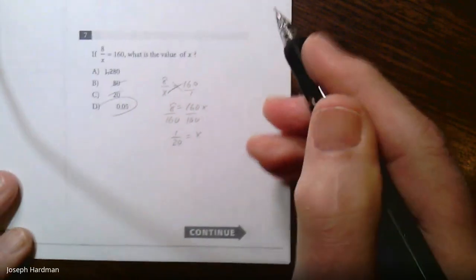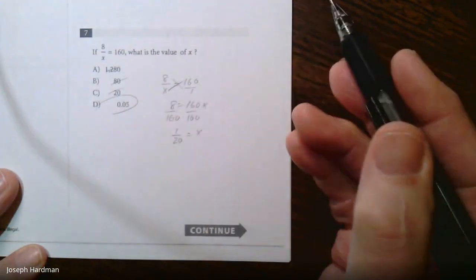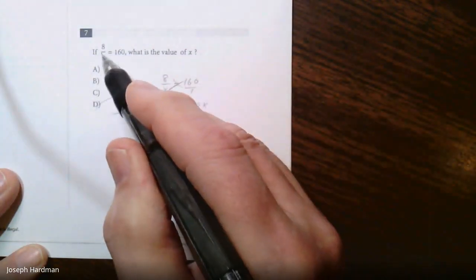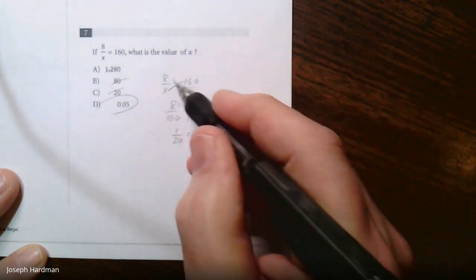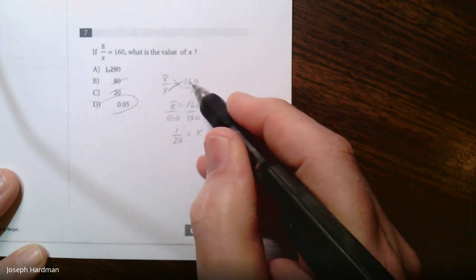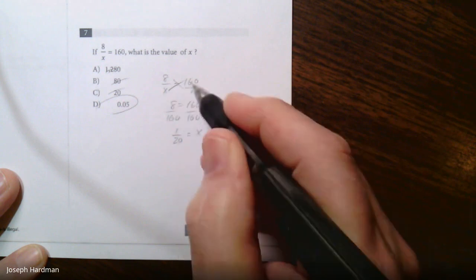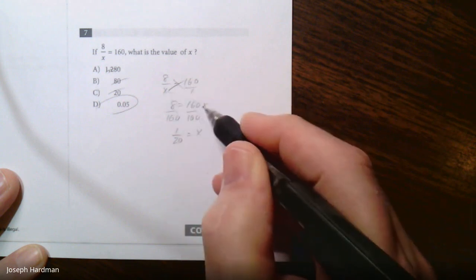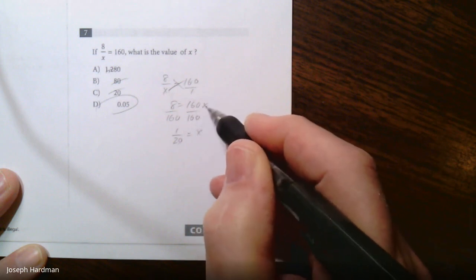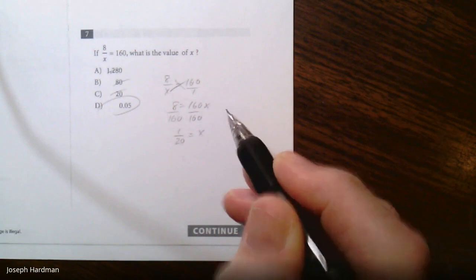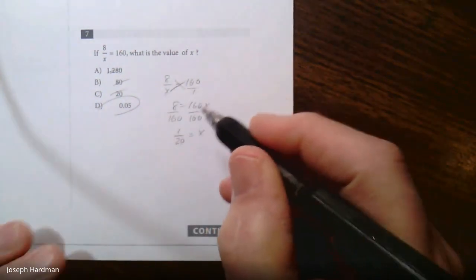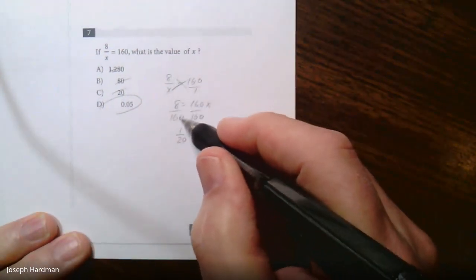Last one I will just go through here. This is a proportion. I've gone through on the other videos. When I see this, I think proportion, put it over 1, cross multiply. 8 times 1 is 8, 160 times x is 160x. We always divide by the number by the variable, so we divide by 160. Now, excuse me, 8 divided by 160.